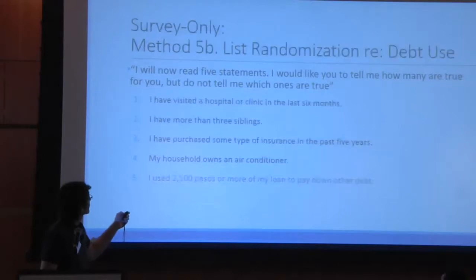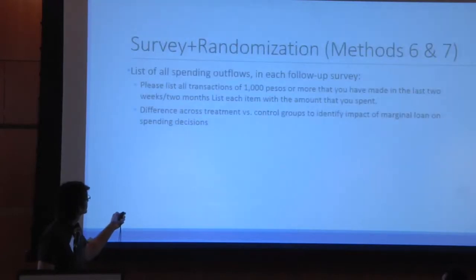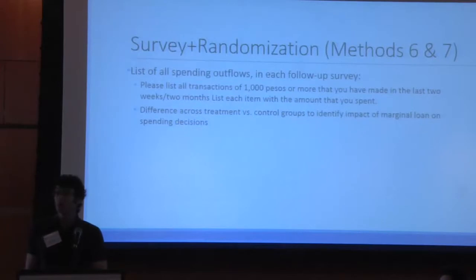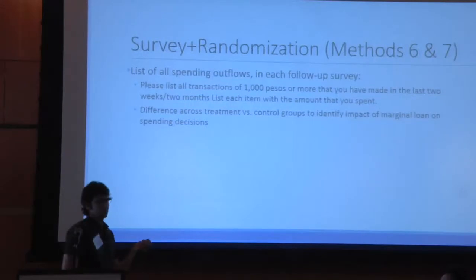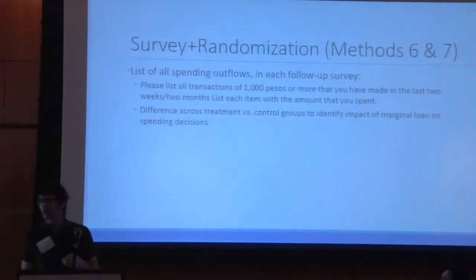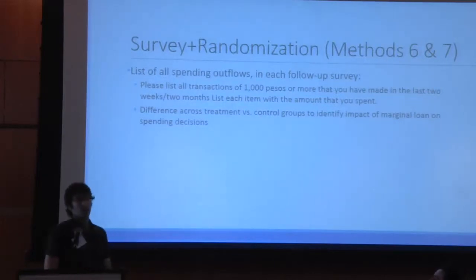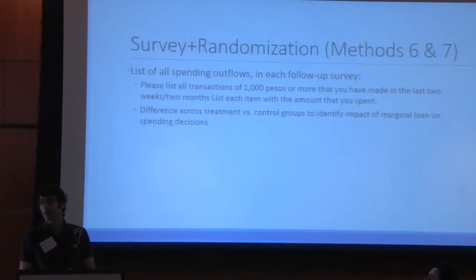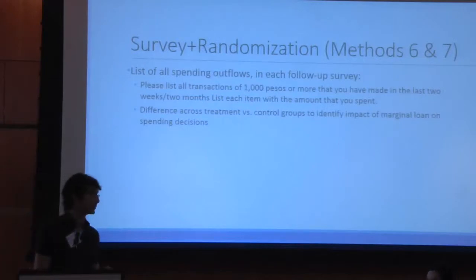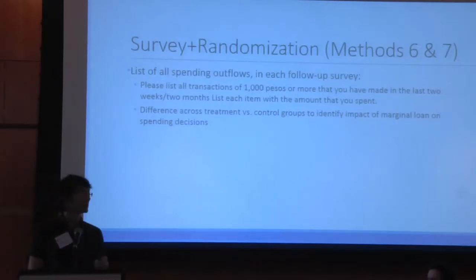In the follow-up surveys, our surveyors ask respondents to list all transactions of a thousand pesos — about 20 dollars — or more that they've made in the last two weeks or the last two months, listing each item with the amount spent, with no mention of the loan. We can then use our randomization to compare the spending responses in the treatment versus control group to actually identify the marginal effect of getting access to one of these microloans on spending.